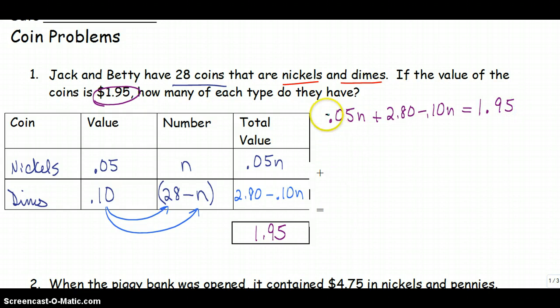So now I'm going to combine my like terms. I have .05n and minus .10n. I'm going to subtract the small number from the large number and keep the sign of the large. So when I do that, I have negative .05n.